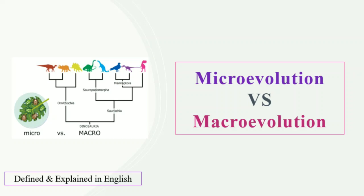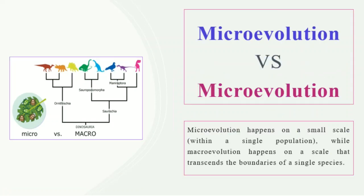In this video we are going to talk about the basic differences between microevolution and macroevolution. Microevolution, as the name indicates, occurs at a small level — it basically happens at a small scale within a single population. The changes in the allelic frequency that occur at the population level are basically microevolution.